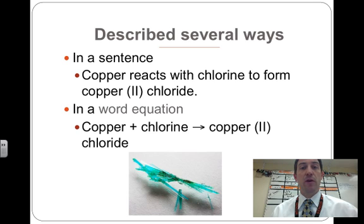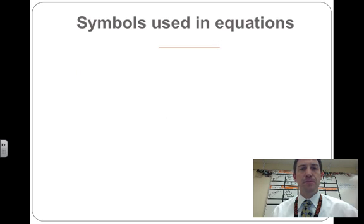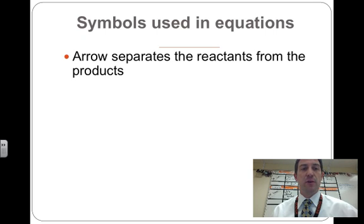When we turn that into a word equation, we need to understand some symbols. We have copper plus chlorine reacts to form, that's what the arrow means, copper 2 chloride. And there's a picture of copper 2 chloride crystals down at the bottom. Let's dissect this a little more and look at the symbols that we need to know to be able to write out these sort of reactions.